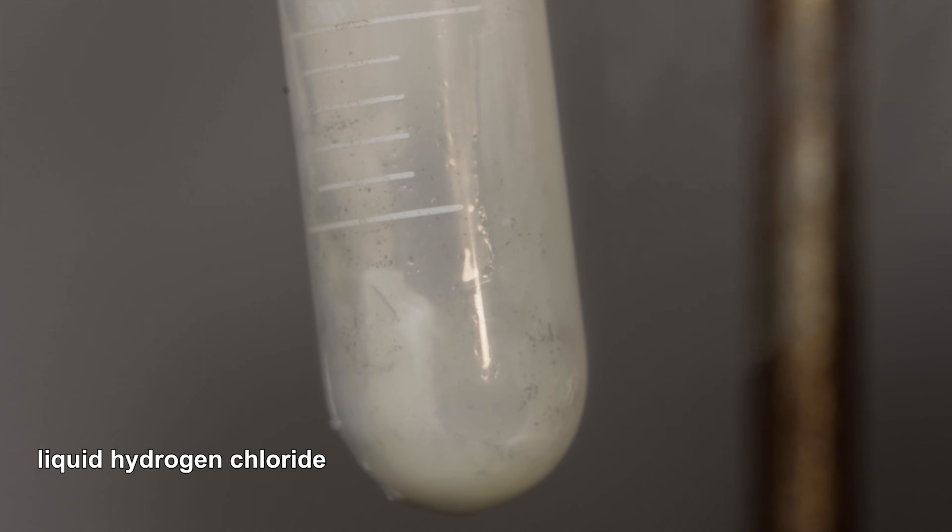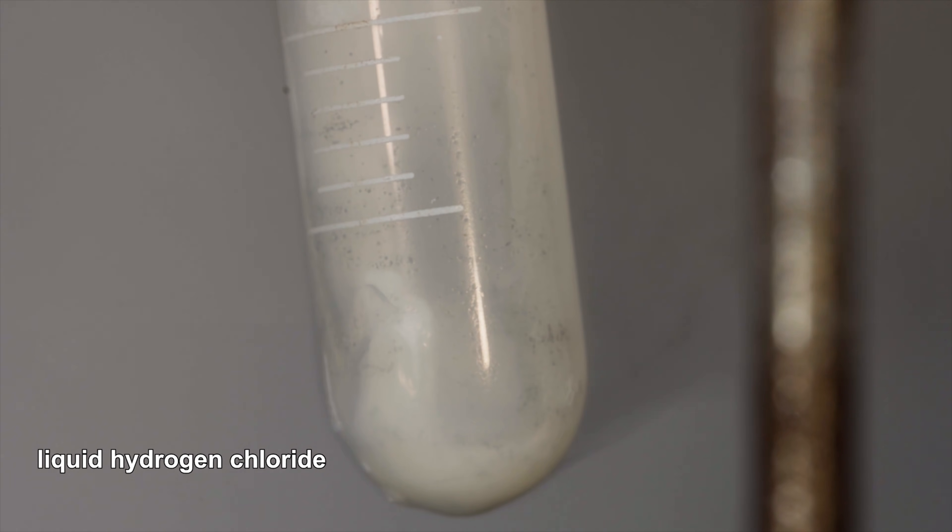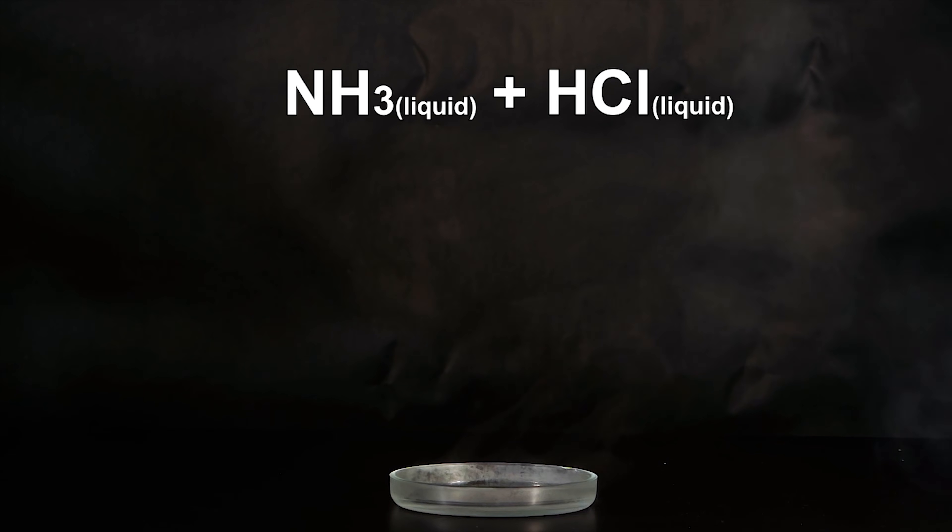To make hydrogen chloride liquid, I had to cool it down in liquid nitrogen. So what will happen if liquid ammonia and hydrogen chloride contact each other?